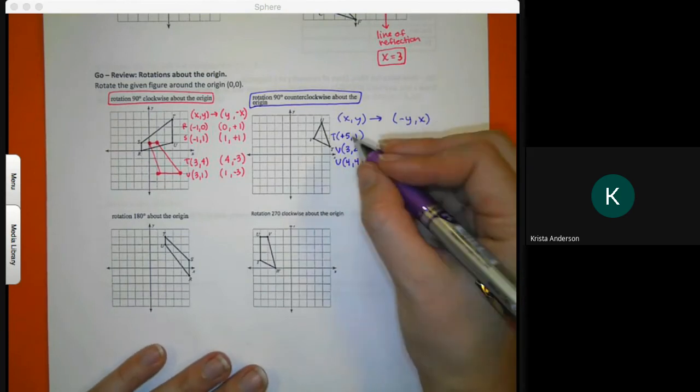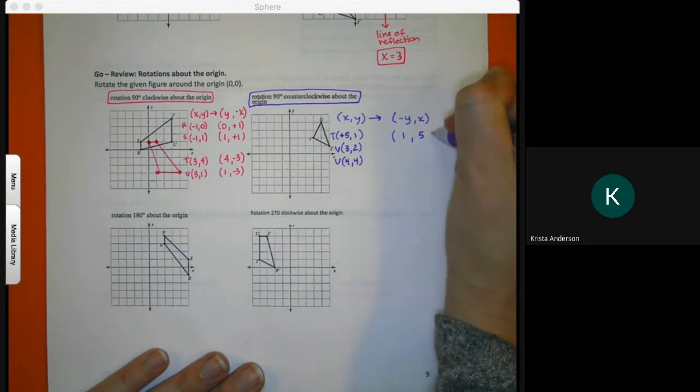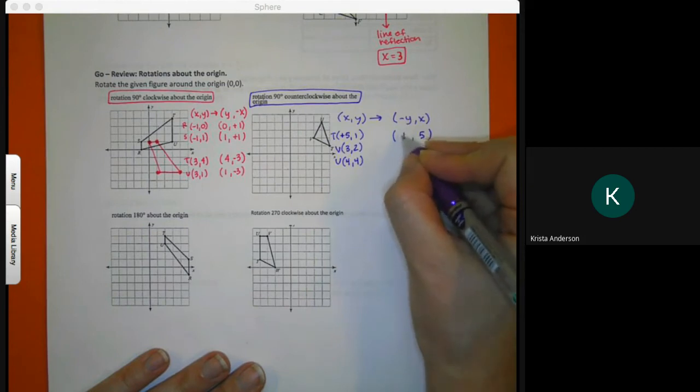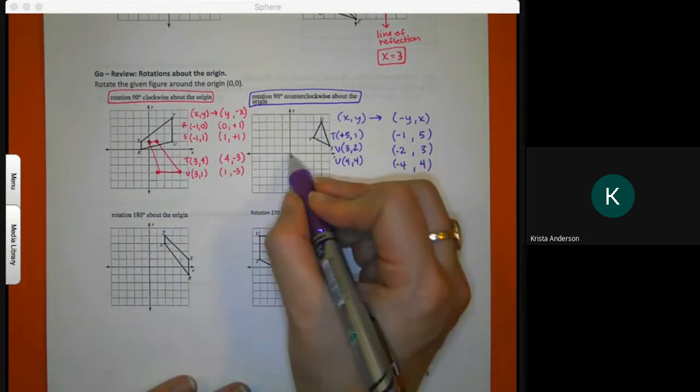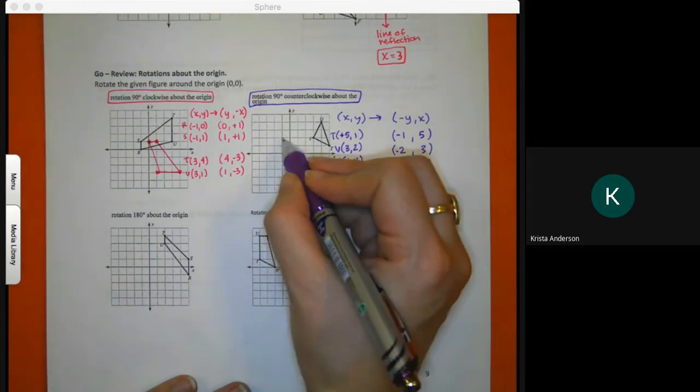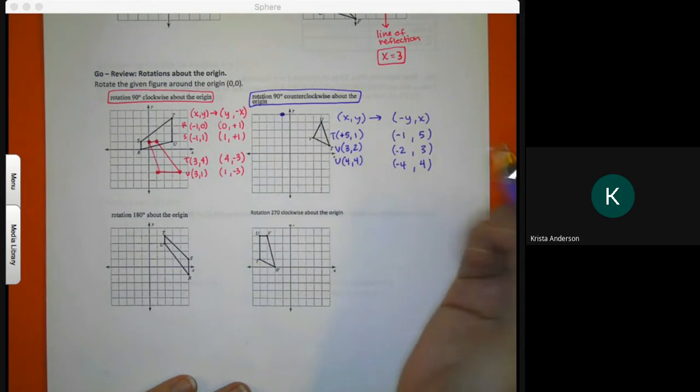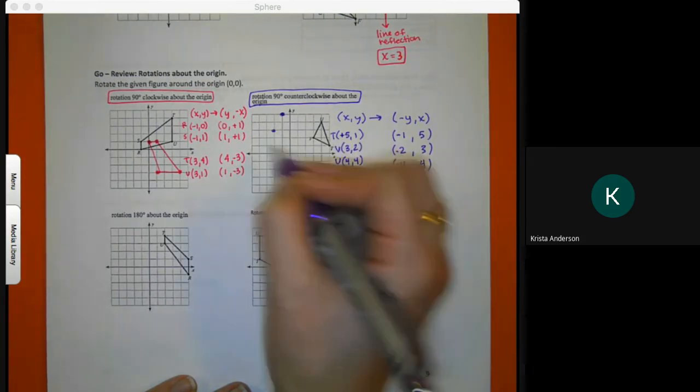These are my originals. When I adjust, I'm going to flip sides and change the sign on the left one. So this one changes from a positive to negative. Flip the numbers, change the sign on the left. Flip the numbers, change the sign on the left. Flip the numbers, change the sign on the left. Negative one up five, negative two up three, negative four up four.